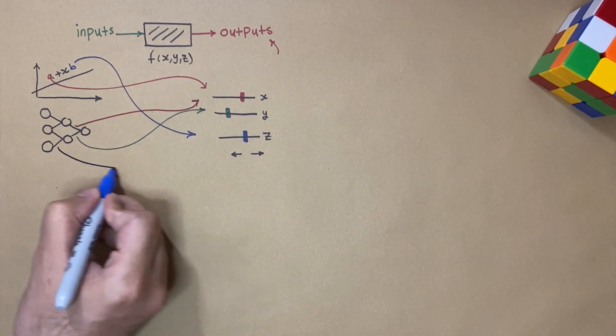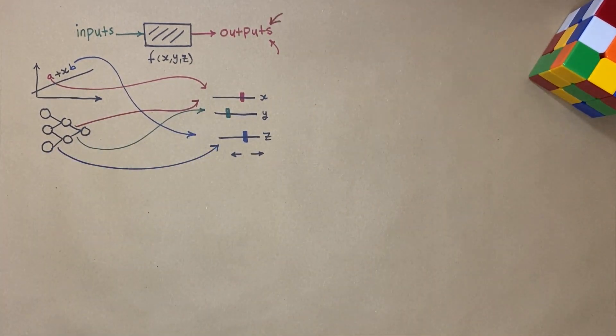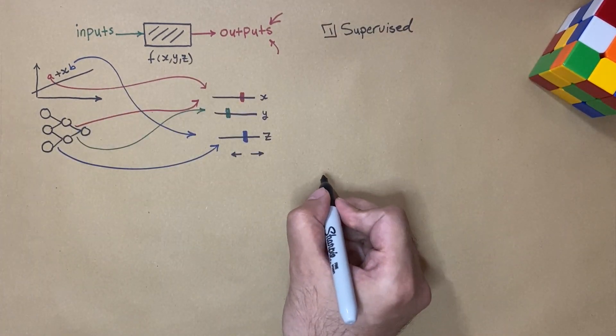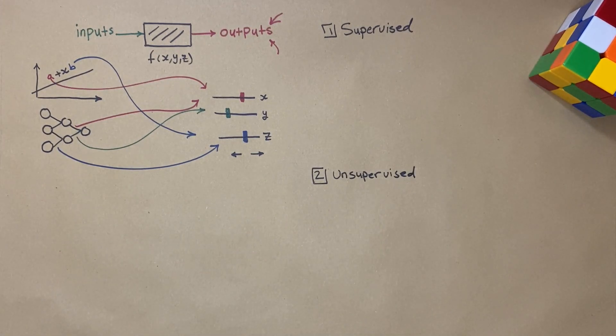Let's see how we can get the best outputs. I'll explain this using two examples. The first one is using supervised learning, while the second one is using unsupervised learning. Well, let's move that cube from here.